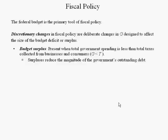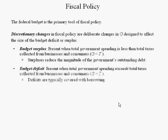Surpluses reduce the magnitude of the government's outstanding debt, which is about $14 trillion — about the same as the value of our economic output for a given year. A budget deficit is present when total government spending exceeds total taxes collected from businesses and consumers for a given year. The 2009 budget deficit is about $1.4 trillion, or 10% of our economy's output and 10% of our government's outstanding debt. Deficits are typically covered by the Treasury borrowing by auctioning bonds.